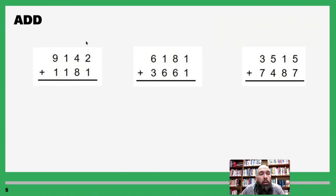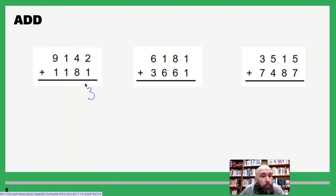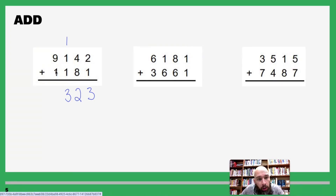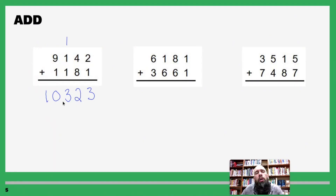Start at the ones place value: two plus one is three, nothing carries over. Four plus eight is twelve, so write out the two and carry the one. One plus one is two, and two plus one is three — don't carry anything over. Finally at our thousands — the last digit: nine plus one is ten, so just write out ten. Put our comma right there — done!